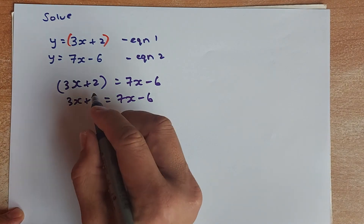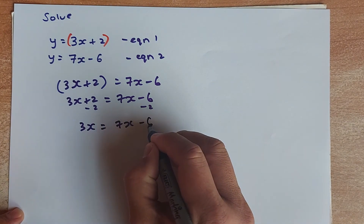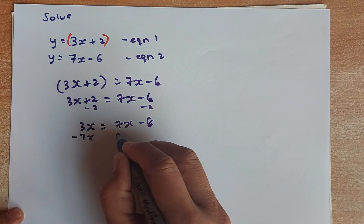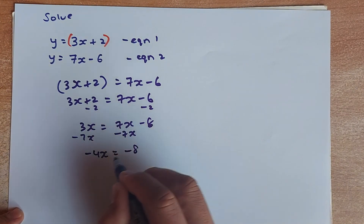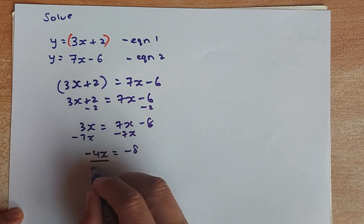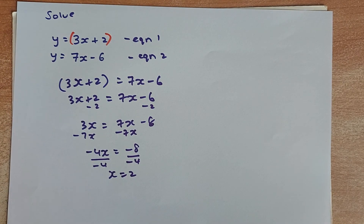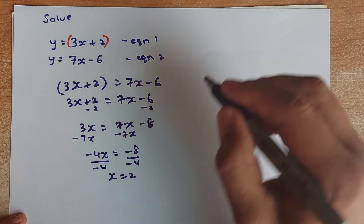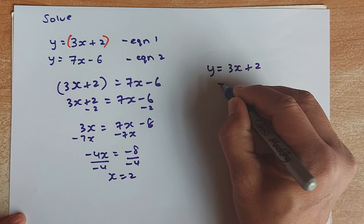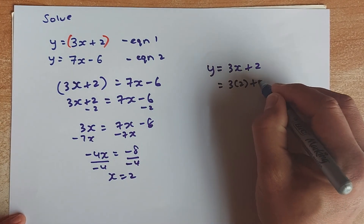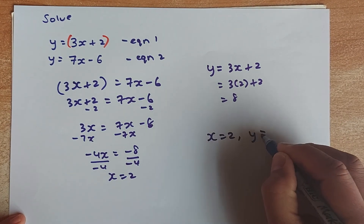Now solve using linear algebra. First, subtract 2 from both sides: 3X equals 7X minus 8. Then subtract 7X from both sides: minus 4X equals minus 8. Divide by minus 4: X equals 2. To find Y, substitute X equals 2 into equation 1: Y equals 3 times 2 plus 2, which equals 8. The final answer is X equals 2 and Y equals 8.